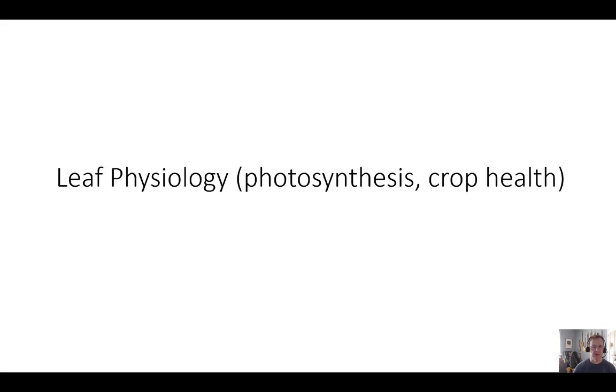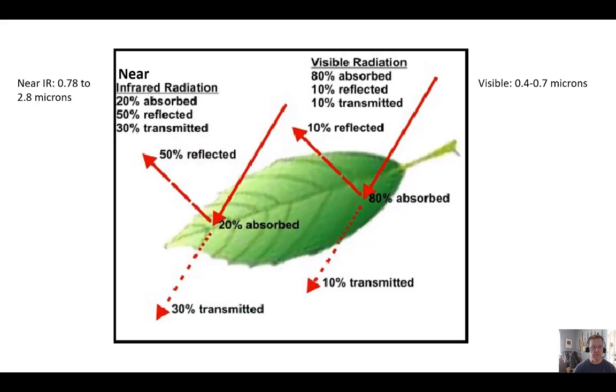First, let's talk about leaf physiology. When radiation strikes a leaf, it's either absorbed by the leaf, reflected, or transmitted. And every wavelength behaves differently. A leaf can absorb a lot of radiation in one wavelength but reflect a lot in another.